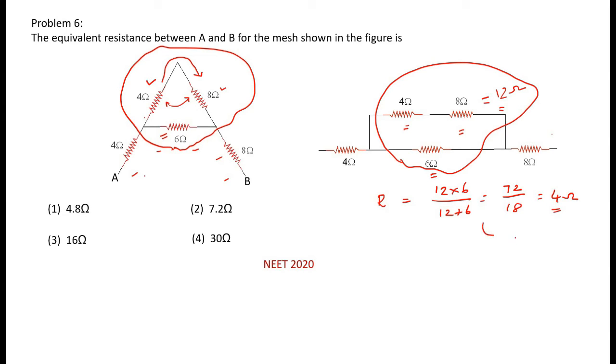You can remember here, the formula is R1 times R2 by R1 plus R2. Two resistances are in parallel, you can simply write this way.